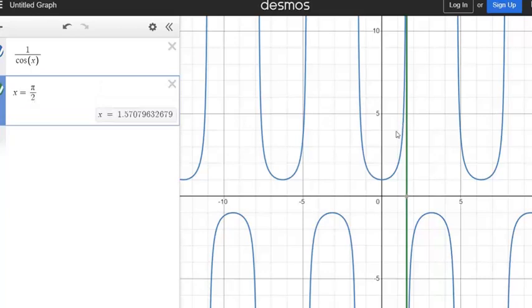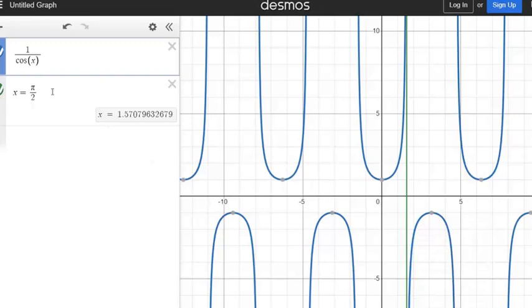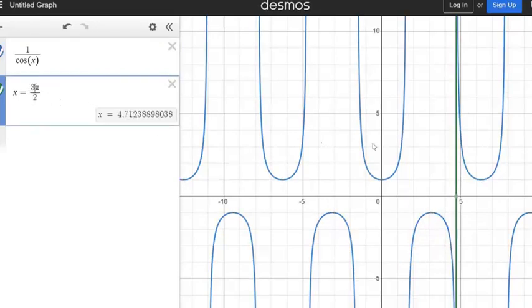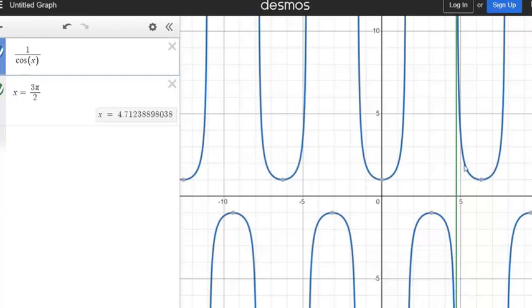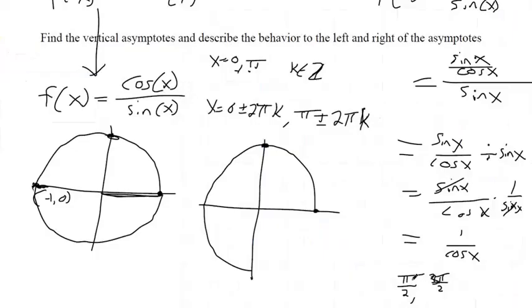So our first one was x equals pi over 2 for a vertical asymptote. The behavior approaching it from the left is positive infinity. And approaching it from the right, it's going to negative infinity. And you'll see the same thing with the other vertical asymptote. Oh, sorry. From the left, it's actually negative infinity. I spoke too soon. So here's our other vertical asymptote. As you approach it from the left, it's negative infinity. As you approach it from the right, it's positive infinity. So this one, they're different. The behavior from the left and the right are different from one another.